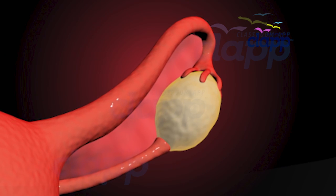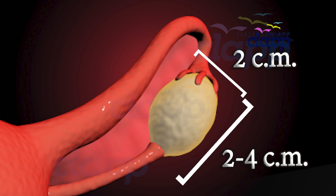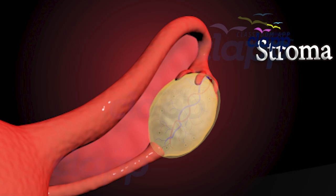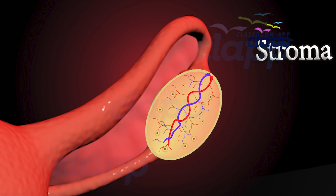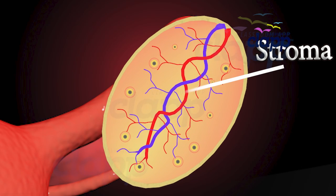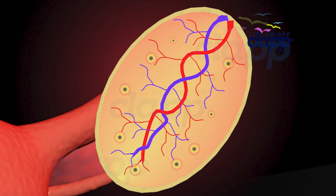Each ovary is 2 to 4 centimeters long and 2 centimeters wide. It is composed of connective tissue called stroma, covered by a layer of germinal epithelium.